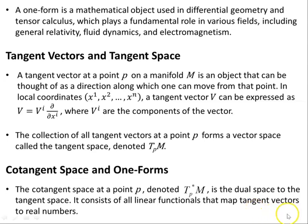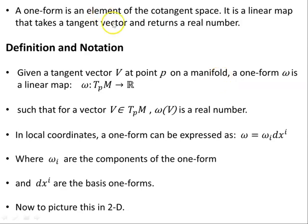So these one-forms, linear functionals, are going to take a vector as an argument and contract with it to produce a real number. A one-form is an element of the cotangent space. It is a linear map that takes a tangent vector and returns a real number.